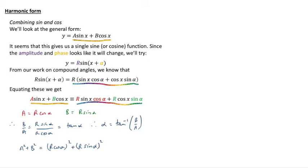We also may notice, and this is rather lovely, that if we square a and square b we get a squared plus b squared is r cos alpha squared plus r sine alpha squared. That is r squared times cos squared alpha plus sine squared alpha and that is of course r squared because cos squared alpha plus sine squared alpha is always 1. So this is neat because we've now got expressions for alpha and for r in terms of our a and b.